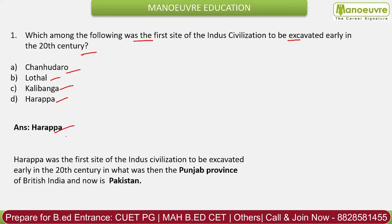Harappa was the first site, discovered by Daya Ram Sahni in 1921. The second site was Mohenjo-daro, discovered by Rakhal Das Banerji in 1922. These are the two most important first-discovered sites. Harappa was on the bank of the Ravi River.